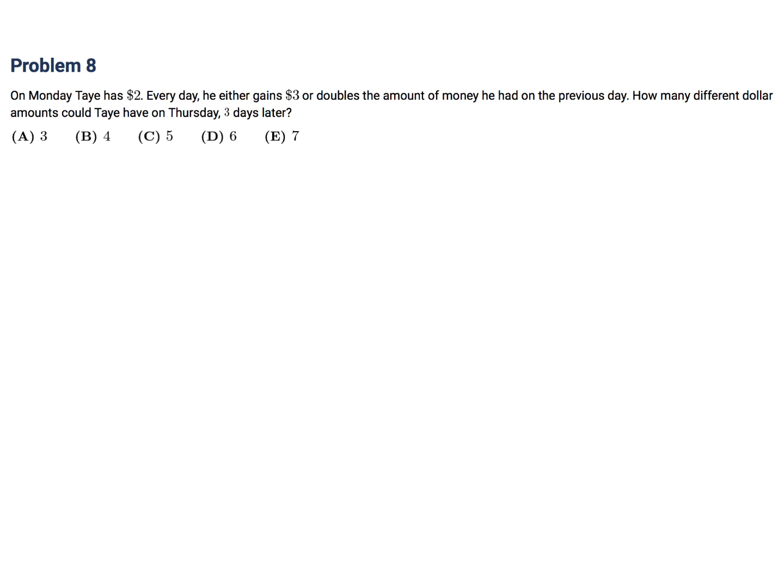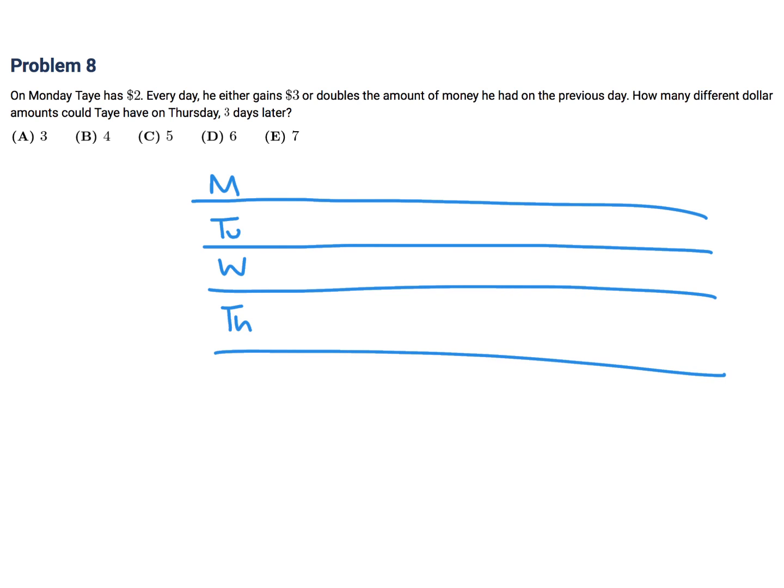On Monday, Ty has two dollars. Every day, he either gains three or doubles the amount of money he had on the previous day. How many different dollar amounts could Ty have on Thursday, three days later? We have Monday, Tuesday, Wednesday, and Thursday. So let's fiddle around with this and see what we get. On Monday, we start with two bucks. So we have two choices now for Tuesday. He can either gain three dollars and go up to five or he can double and go to four. Okay. Well, if he went to five, he can gain three dollars and go to eight or double and go to 10. If it was four, he can gain three dollars and go to seven or double and go to eight.